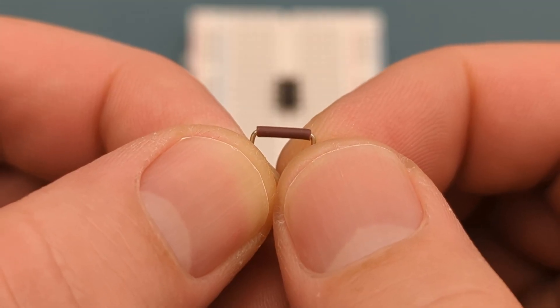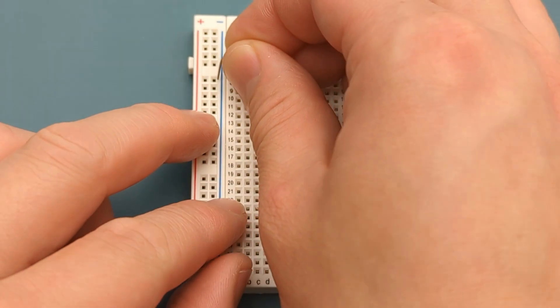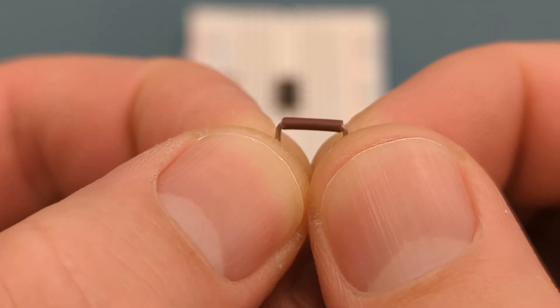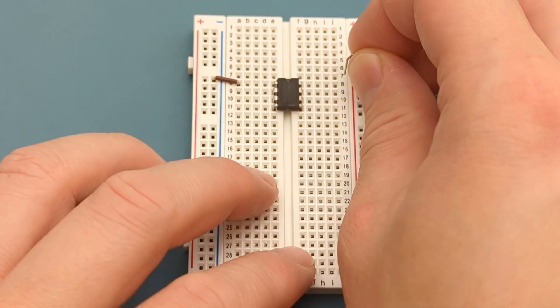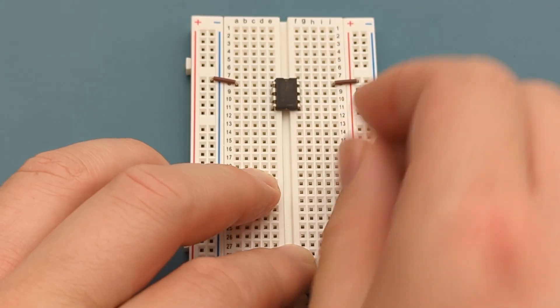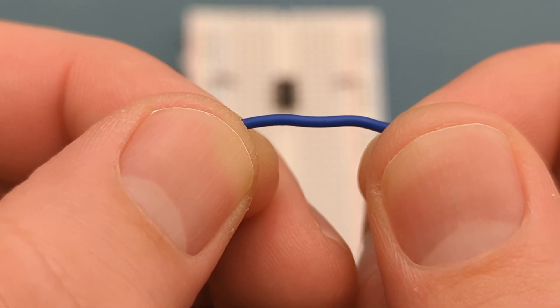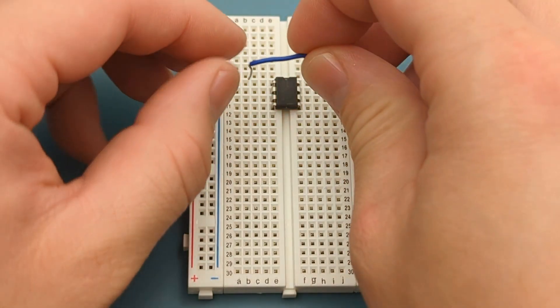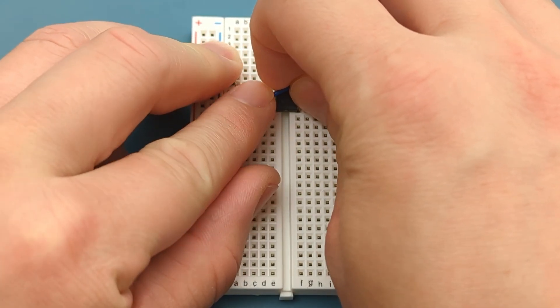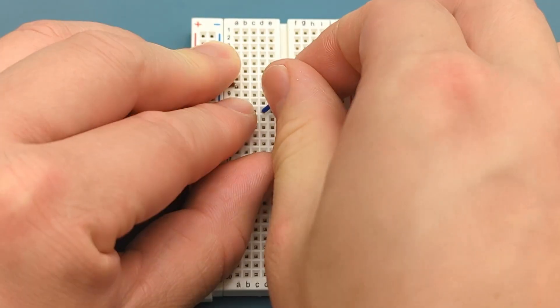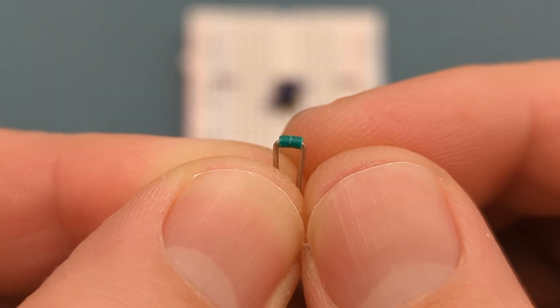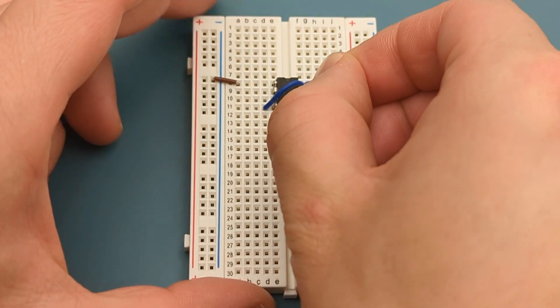A jumper wire connects pin 1 or ground to the negative rail. A jumper wire connects pin 8 or VCC to the positive rail. Use a jumper wire to connect pin 4 or reset to pin 8 or VCC. Use a jumper wire to connect pin 6 or threshold to pin 7 or discharge.